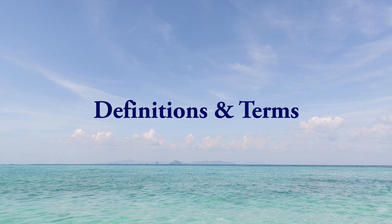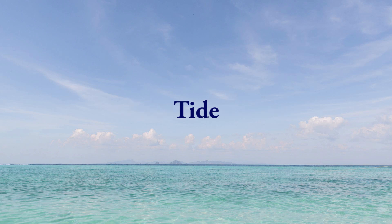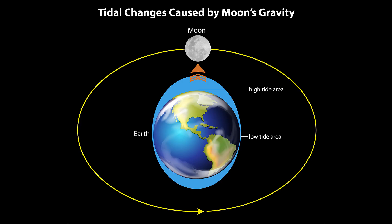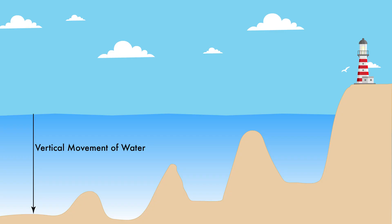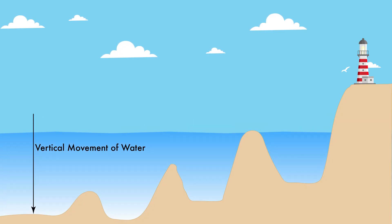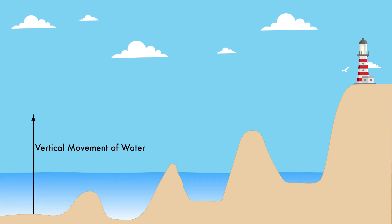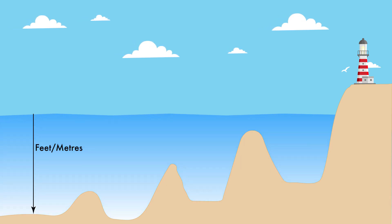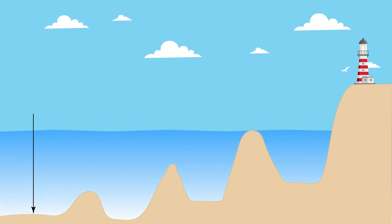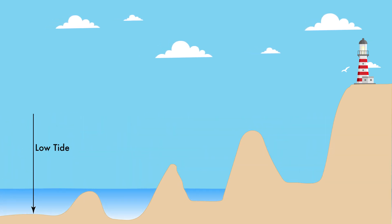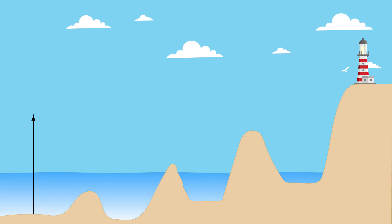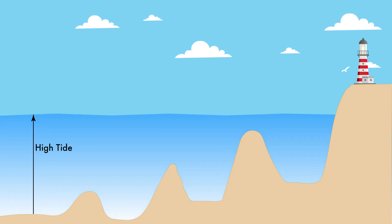Let's start by defining some of the more common terms that you need to understand when reading tide and current tables. Driven by the gravitational pull of the moon, and to some extent the sun, tides are the vertical movement of water. Tides rise and fall, they relate to water depth, and are measured in feet or meters. They are expressed as low or high.